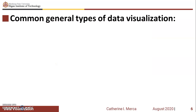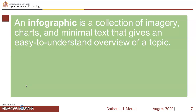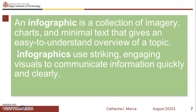What are the common general types of data visualization? We have charts, tables, graphs, maps, infographics, and dashboards. An infographic is a collection of imagery, charts, and minimal text that gives an easy-to-understand overview of a topic. An effective infographic gives the viewer all the information needed to make an informed decision. Infographics use striking, engaging visuals to communicate information quickly and clearly. A strong infographic tells a story — it combines text, illustrations, icons, and data visualizations.